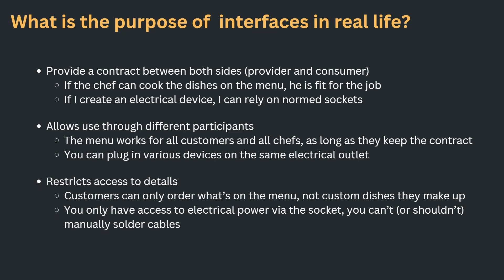Last but not least out of those six, in my opinion very, very important: interfaces restrict access to details. Customers can only order what is on the menu, not custom dishes they make up, which is a very good protection for the chef — he only needs to care about items on the menu. And way more important for your life is that you don't have access to the live wires behind an electrical power socket. You only have access to the socket itself and you really, really shouldn't manually solder those cables.